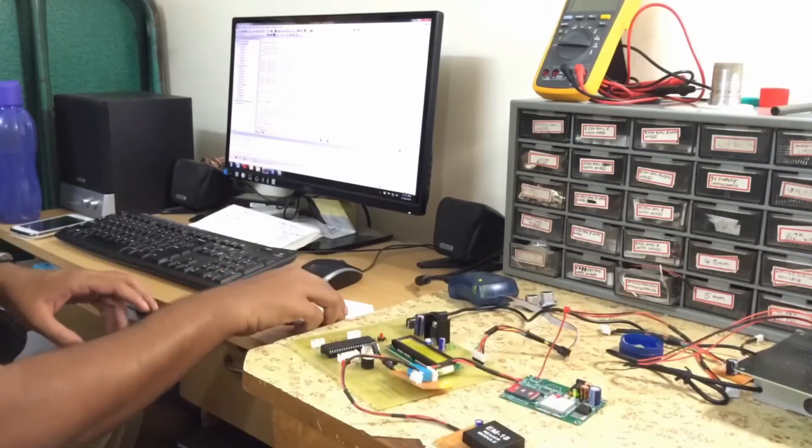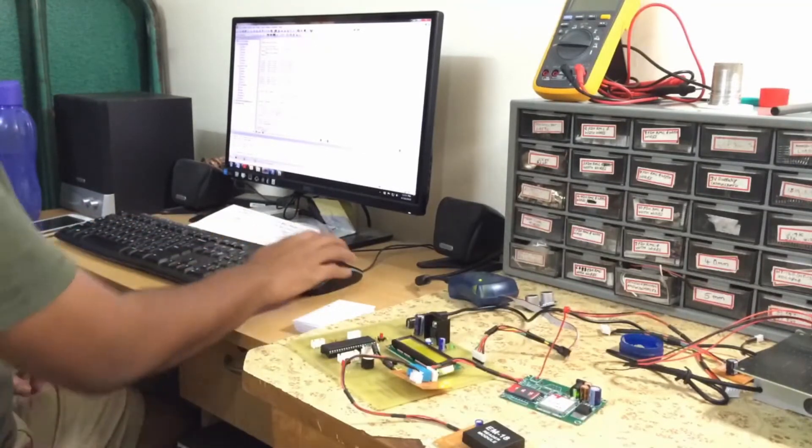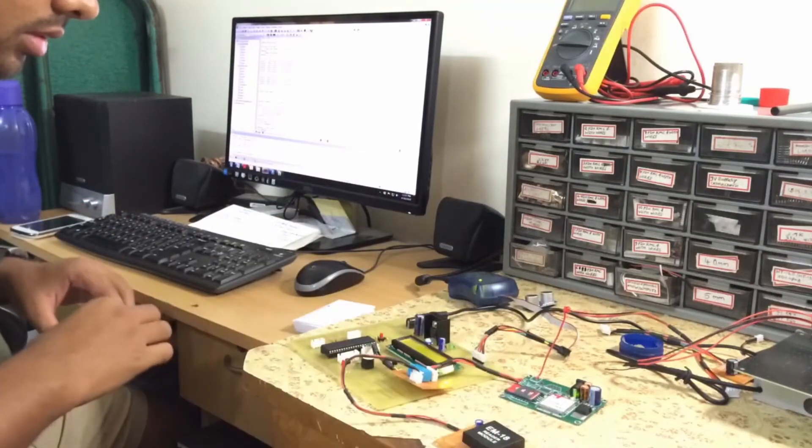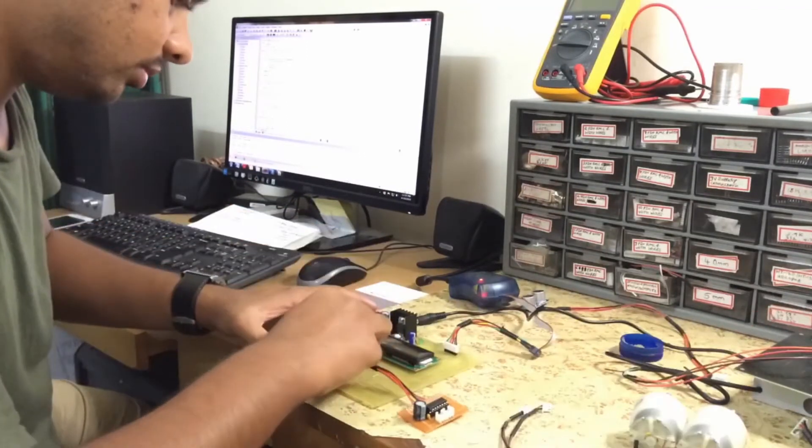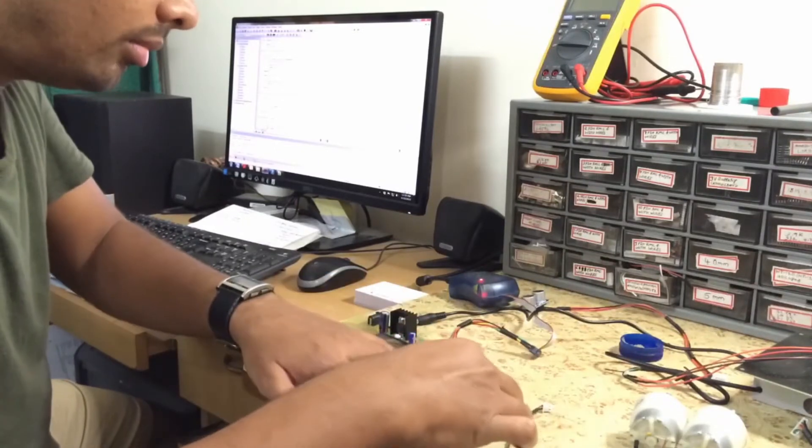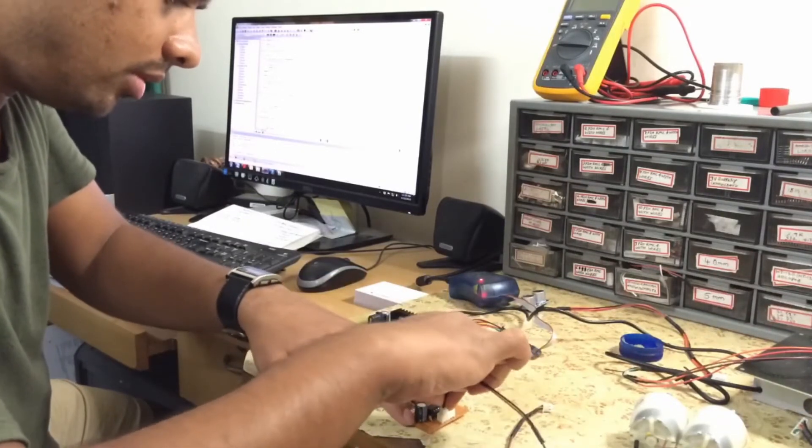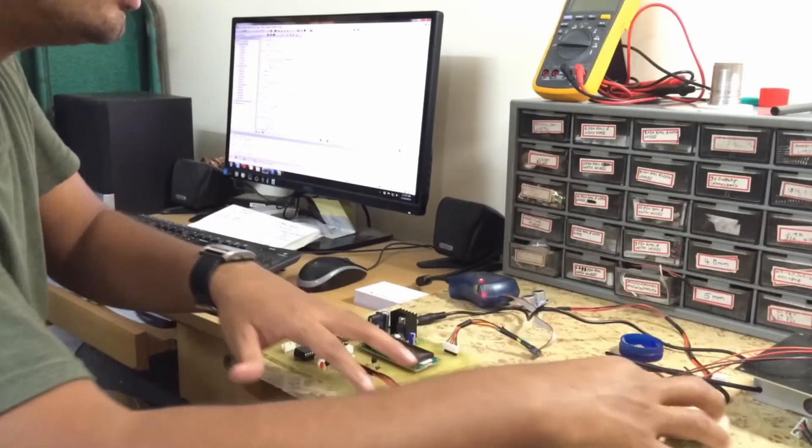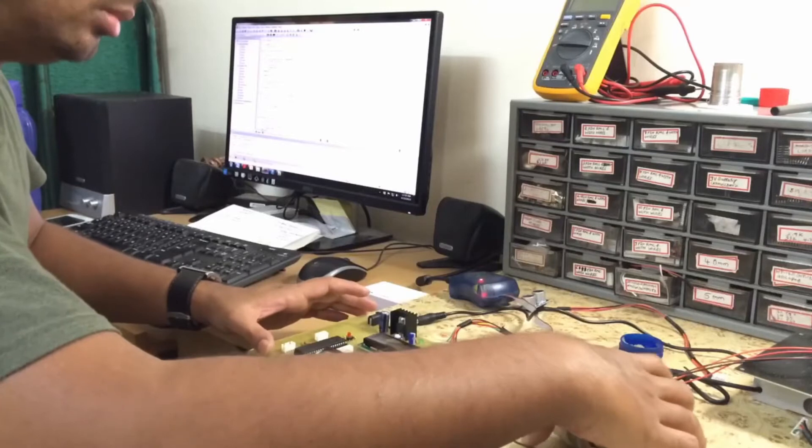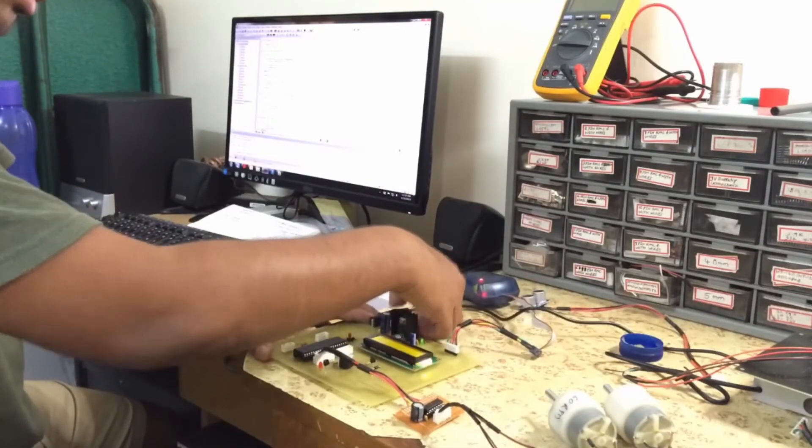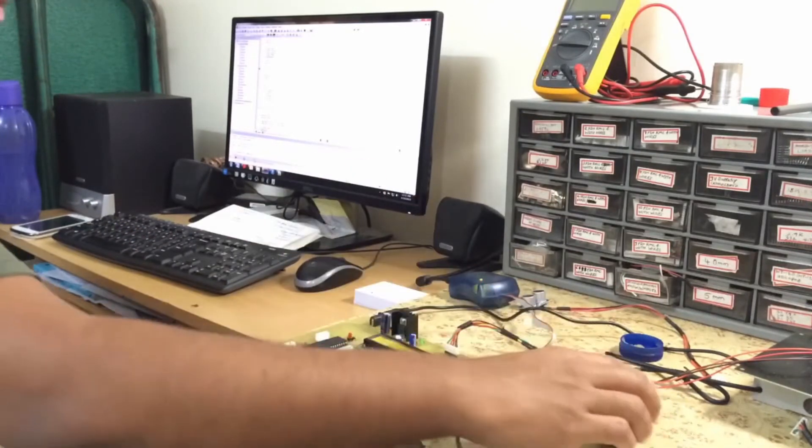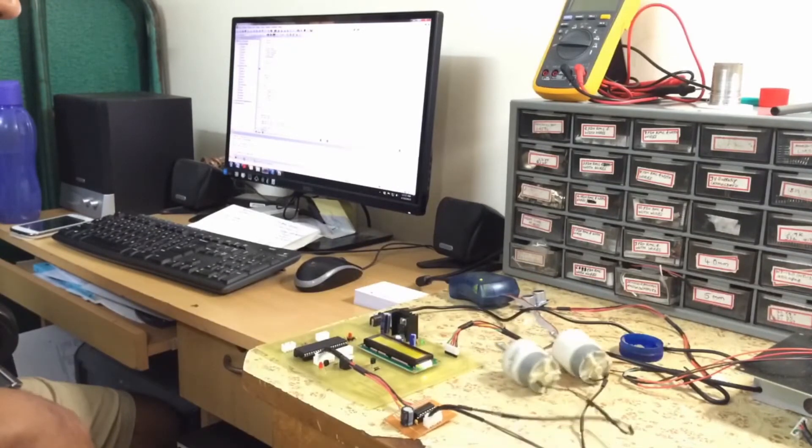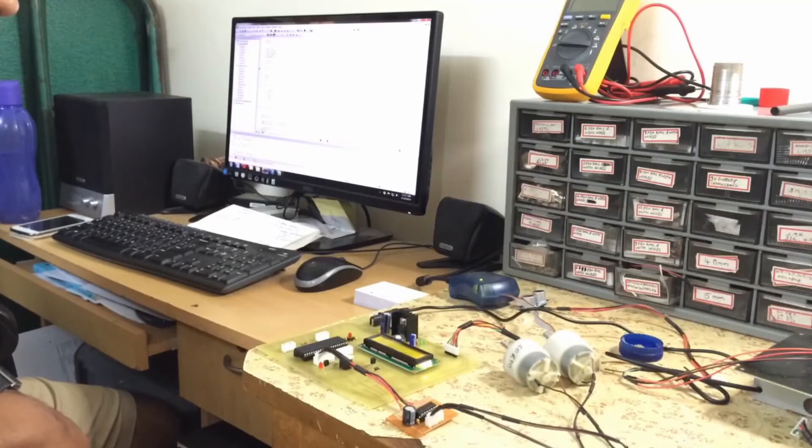After that, I tested the RFID reader. Then I tested DC gear motors which are driven through L293 motor driver. The robot has to take left turn, right turn, or go forward, as determined by the RFID tags.